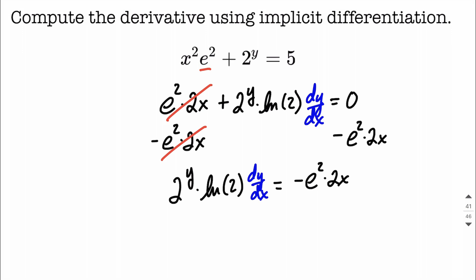And then all that remains is we need to isolate that dy over dx. Well, it's connected with everything else on the left-hand side with multiplication. So let's go ahead and just divide both sides by 2 to the y times natural log of 2.